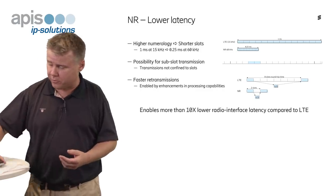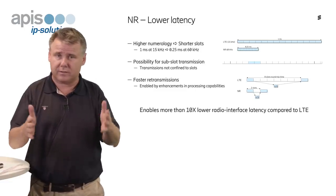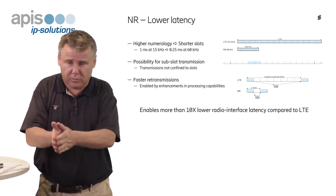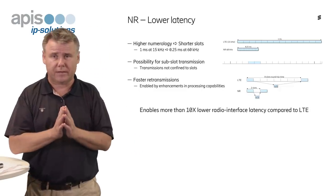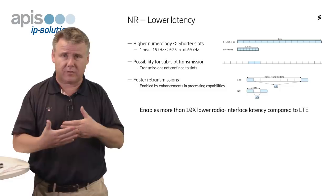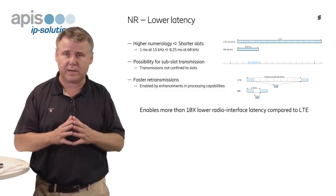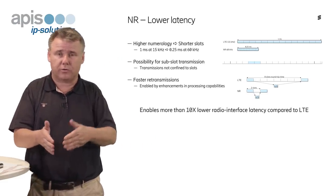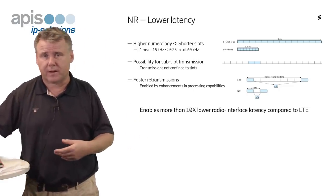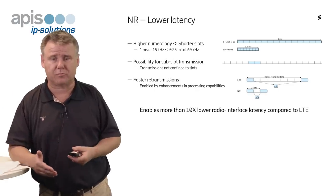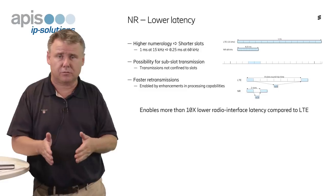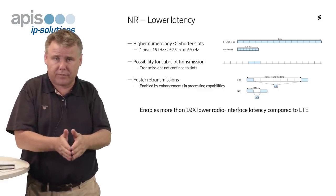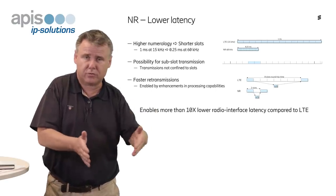Even more important for NR's latency is that, unlike LTE where transmissions must be confined within slots — starting at a slot boundary and lasting the full slot — in NR there is no such constraint. You can actually start transmission not on a slot boundary but on any symbol, and carry out the transmission for an essentially arbitrary number of symbols, much shorter than a full slot. This means that when data comes in, you don't have to wait for the start of a slot; you can start immediately at the first available symbol and carry out the transmission over just a few symbols.